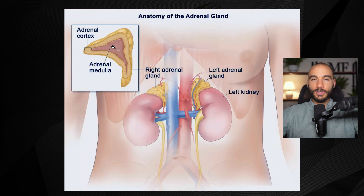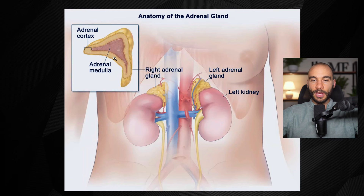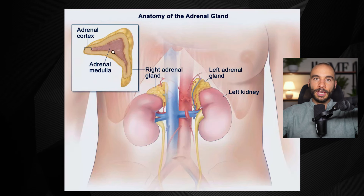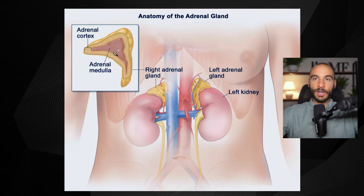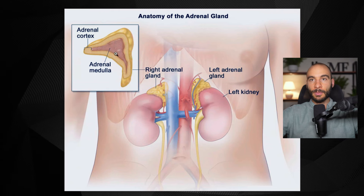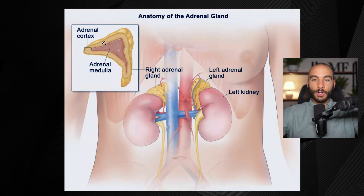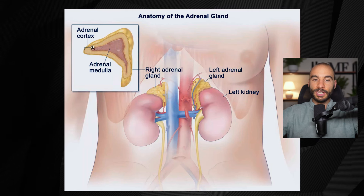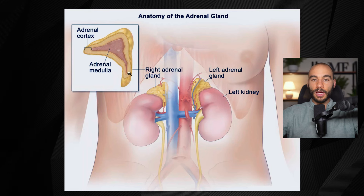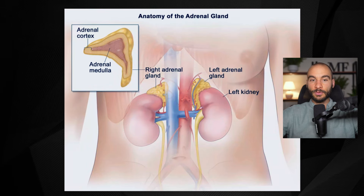There's the adrenal medulla, which is the internal portion of the adrenal gland, and then there's the adrenal cortex. The adrenal medulla is involved in releasing the catecholamines — adrenaline and noradrenaline — when you're under stress. And you have the adrenal cortex, which produces the hormones cortisol, DHEA, and also aldosterone. The main ones we're going to talk about are cortisol and DHEA for this video.